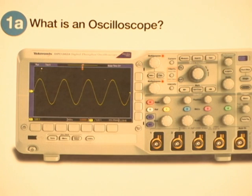So at its heart, an oscilloscope is a device for seeing how the voltage of a signal varies over time.